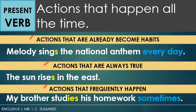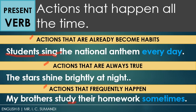The verb in present form ends with S, ES, or IES. But this is only applied when the subject — noun or pronoun — is singular or only one in number. For example, Melody, which is our subject, is only one; therefore, the verb 'sing' has S at the end. On the other hand, a plural subject takes the base form of the verb and doesn't need the suffix S, ES, or IES. Since 'students' is plural, the verb stays in its base form.